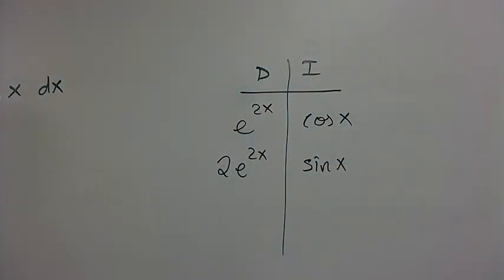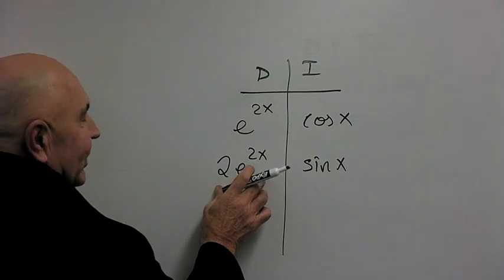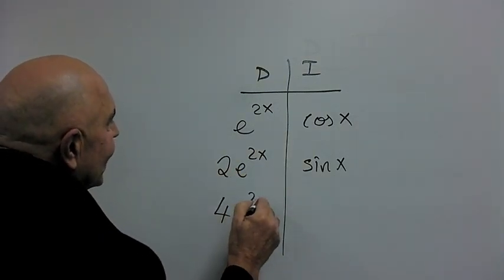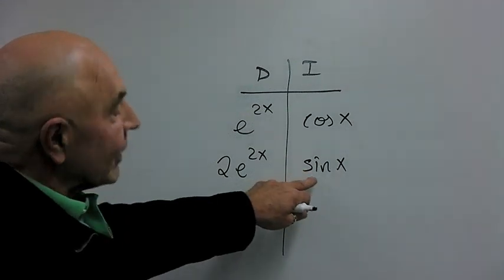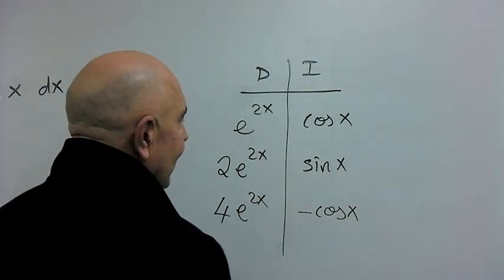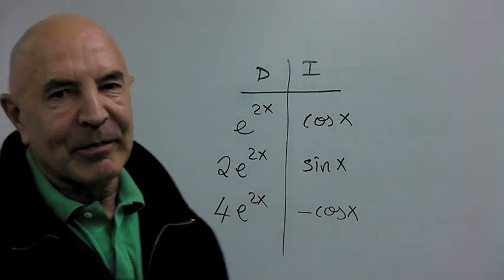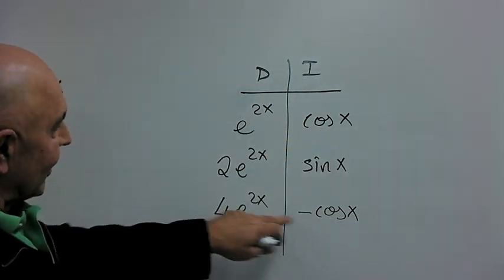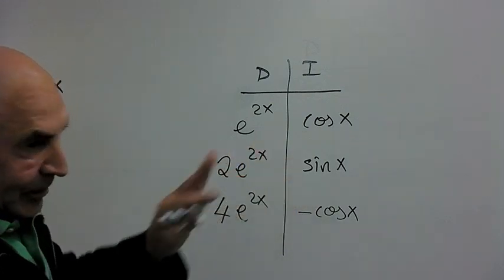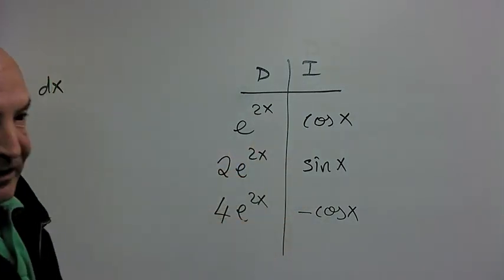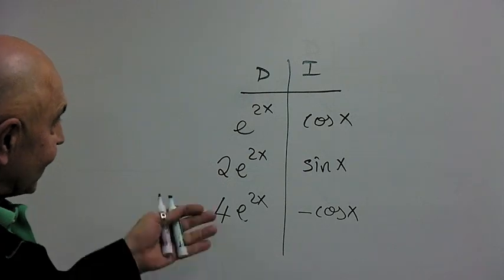Let's try it one more time just for fun. So, let's take the derivative and we'll get 4 times e to the 2x. And when you take the integral of sine, you get negative cosine. Uh-oh. It looks like we're back to where we started. e to the 2x, cosine x, e to the 2x, cosine x, except there's some numbers in front.